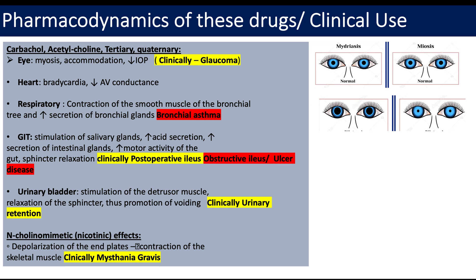Clinical uses of these drugs include: in the eye, they can be given for glaucoma. In the GIT they can be used for postoperative ileus — distension of the bowel after surgery where there is decreased peristalsis. They are contraindicated in peptic ulcer disease since they cause increased acid secretion, worsening the condition. For urinary retention, these drugs increase detrusor muscle contraction and cause sphincter relaxation. They are also used in myasthenia gravis.